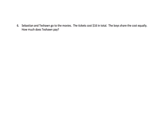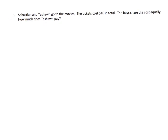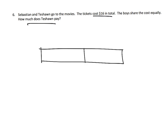And the last problem for this video. It says Sebastian and Tayshawn go to the movies. The tickets cost $16 in total. The boys share the cost equally. How much does Tayshawn pay? Which is, of course, how much does Sebastian pay as well, right? So you've got 2 boys. I'm going to draw a tape diagram cut up into 2, because this stands for Sebastian and this stands for Tayshawn.